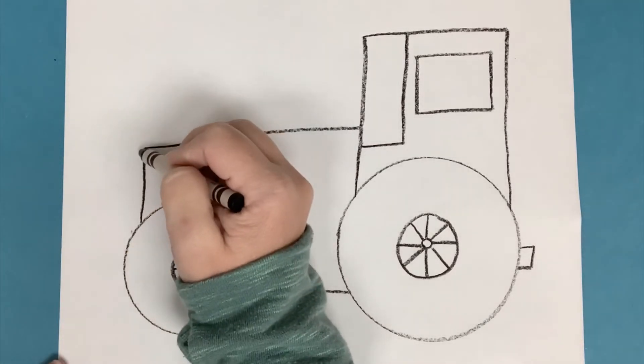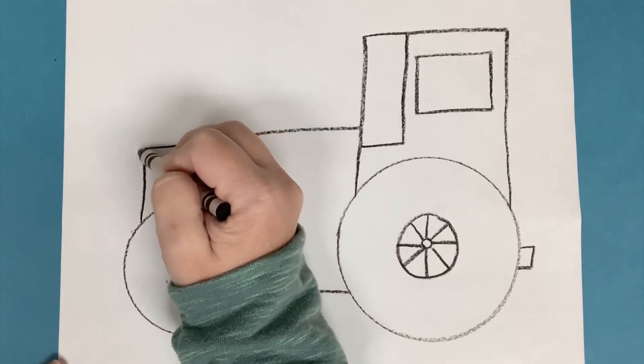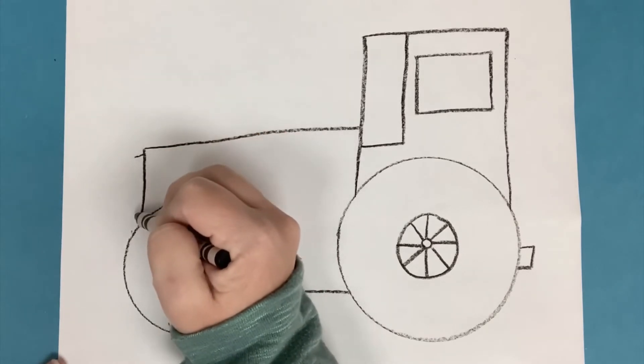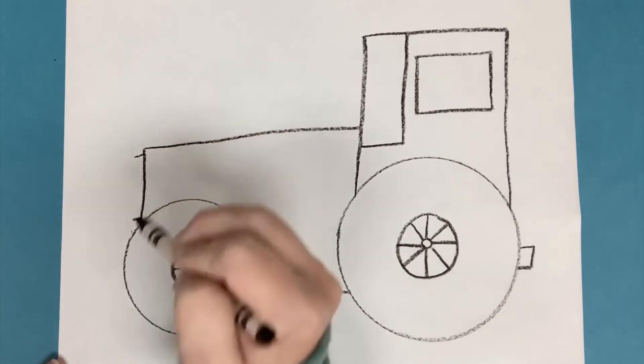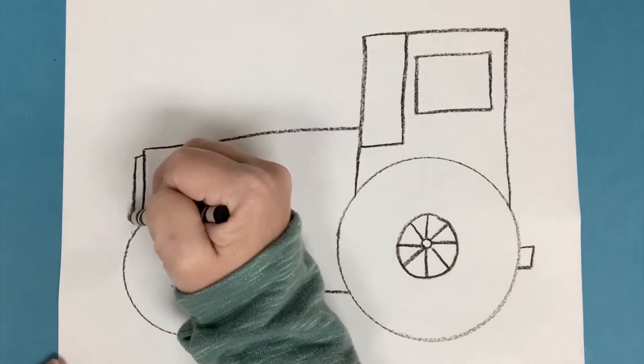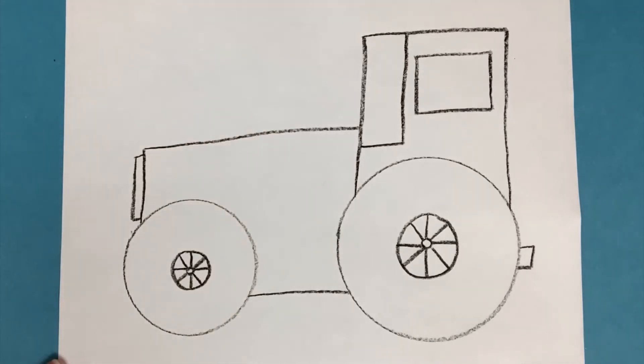And then a little grill at the front. This is going to be the front of the tractor. So I have two little horizontal lines, very short little horizontal lines coming up, and then a vertical line coming down to make a very skinny rectangle.